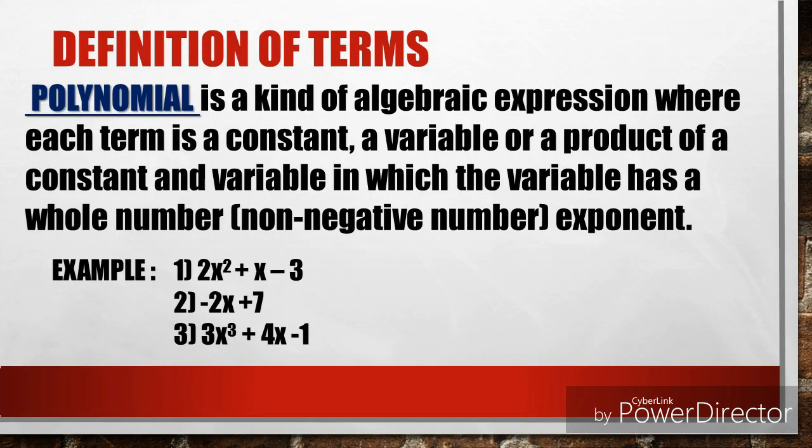Let's have first the definition of terms. The first one is polynomial. What is a polynomial? A polynomial is a kind of algebraic expression where each term is a constant, a variable, or a product of a constant and variable in which the variable has a whole number, non-negative exponent.